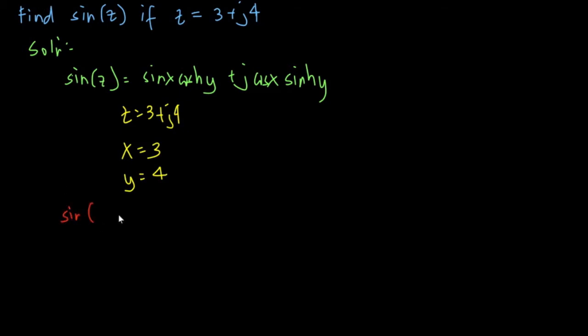So we could say this one: sin 3 plus j of 4 is equal to sin 3 hyperbolic cos 4 plus j cos 3 hyperbolic sin 4.